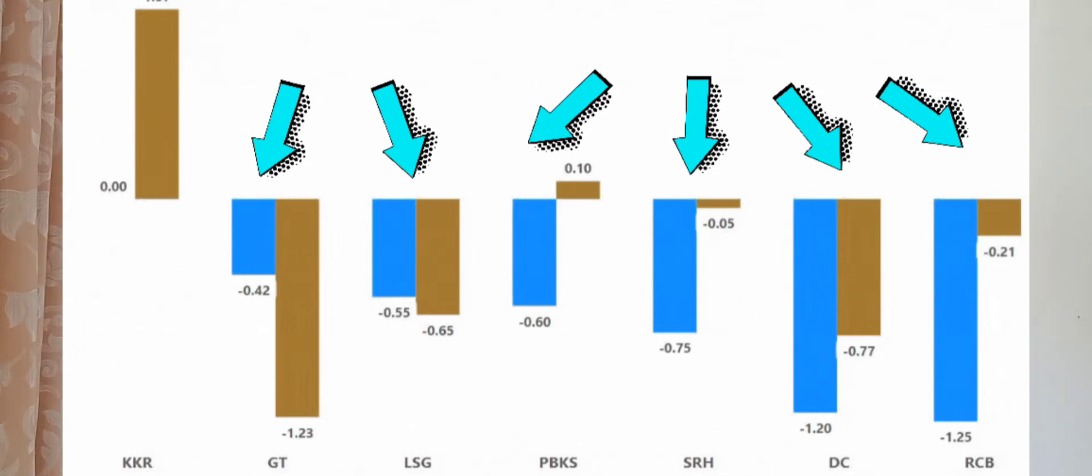They are not too far away at the 10 over mark versus their required rate, but look what happens to them at the 15 over mark. They have in fact widened the gap and increased the gap, which means they are making themselves harder to run chase, but eventually they have been able to chase it down.